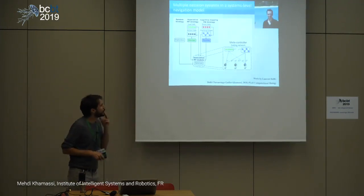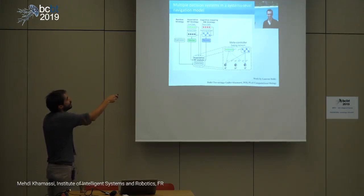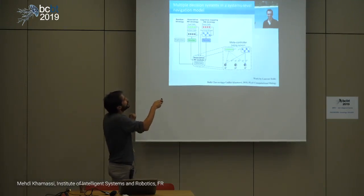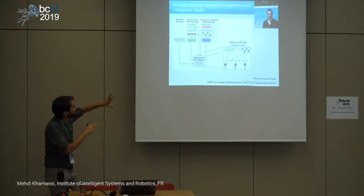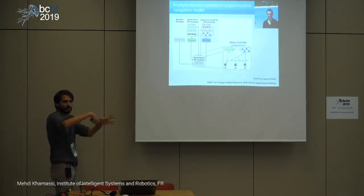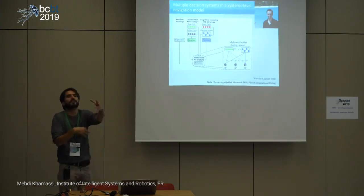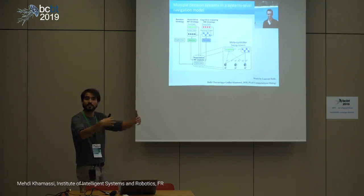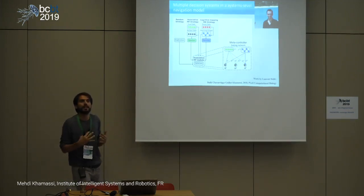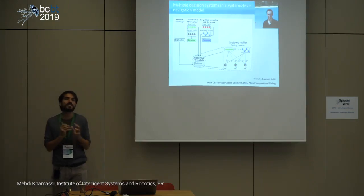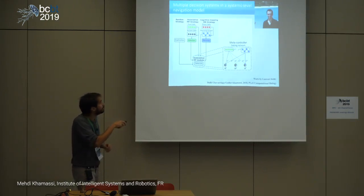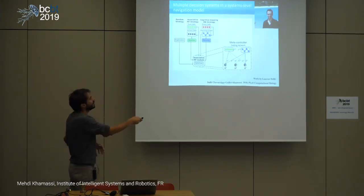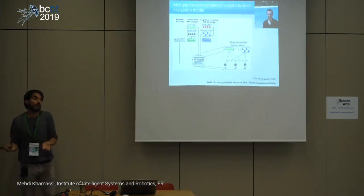We have developed a model combining model-based planning for navigation and model-free strategies, plus an external exploration strategy. It's at a systems level — we have a detailed model of the hippocampus with entorhinal cortex, and basal ganglia loops without a full neural implementation. Each strategy proposes decisions, and a meta-controller — possibly corresponding to medial prefrontal cortex in rats — also learns by reinforcement, but not to select directions of movement, rather to select between those systems and choose the appropriate learning strategy.